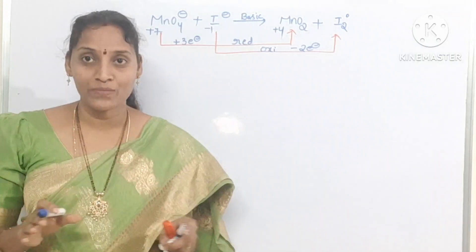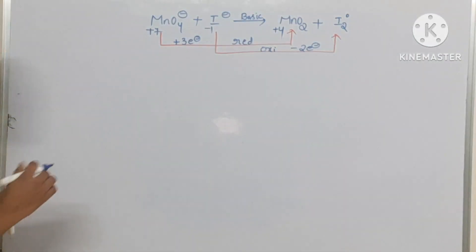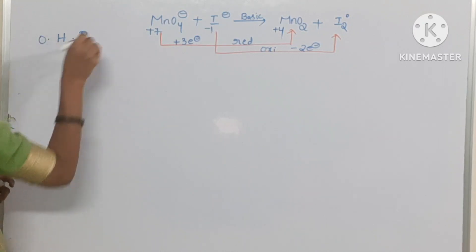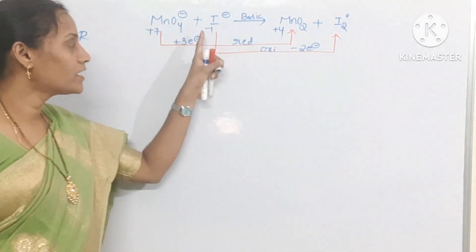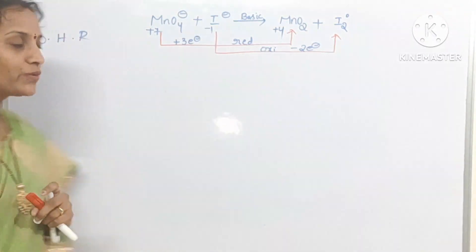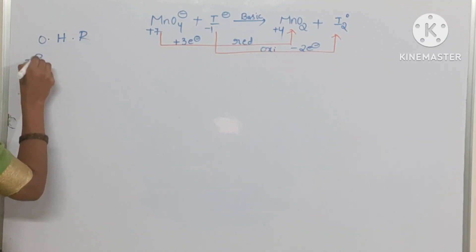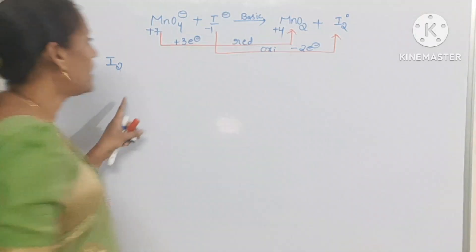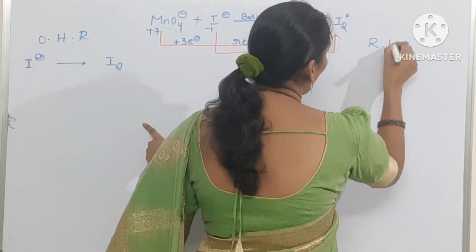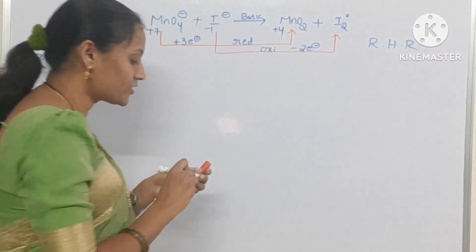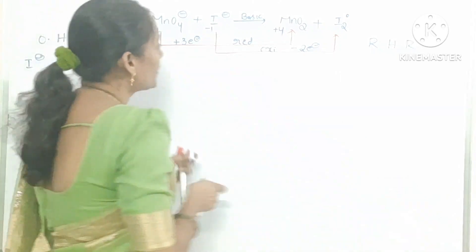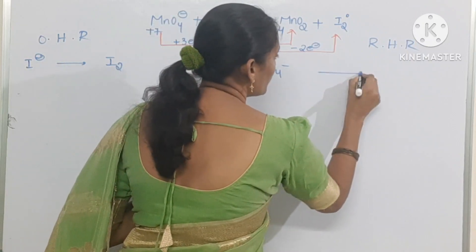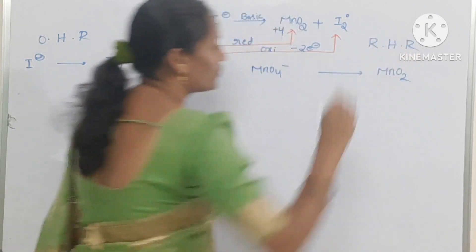The next step is to separate the reduction half reaction and the oxidation half reaction. The oxidation half reaction is conversion of I⁻ to I2. The reduction half reaction is conversion of MnO4⁻ to MnO2.